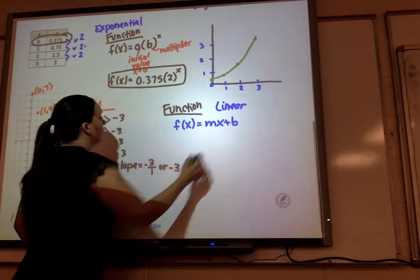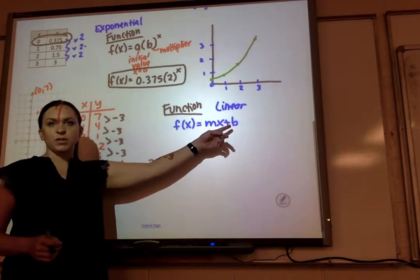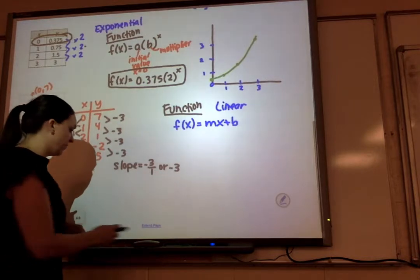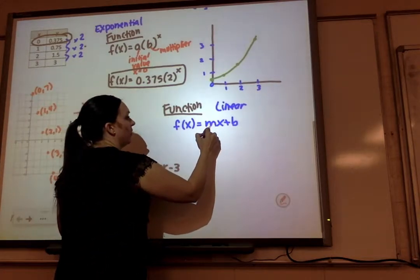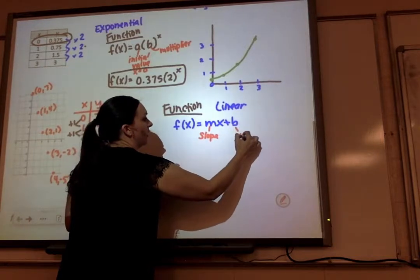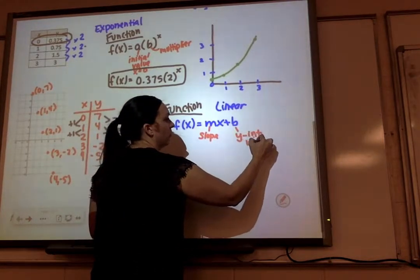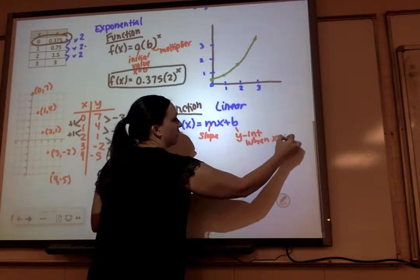My general form is y equals mx plus b, but as a function we do f of x equals mx plus b, where m is my slope, and b is my y-intercept. That means the value when x equals 0.